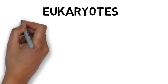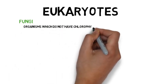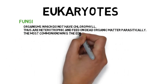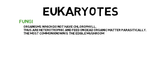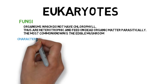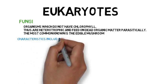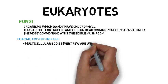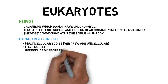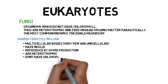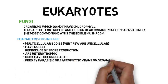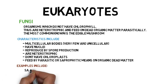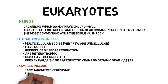Fungi are organisms which do not have chlorophyll, thus are heterotrophic and feed on dead organic matter parasitically. The most commonly known is the edible mushroom. Others include fungi causing diseases like athlete's foot, ringworm, Panama disease, etc. Their characteristics include multicellular bodies (very few are unicellular), have nuclei, reproduce by spore production, are heterotrophic, don't have chloroplasts, and feed by parasitic or saprophytic means on dead organic matter. Examples include Saccharomyces cerevisiae, Penicillium, and mushroom.